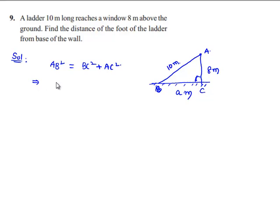That implies AB squared, which is 10 squared, is equal to BC squared, that is a squared, plus AC squared, which is 8 squared.